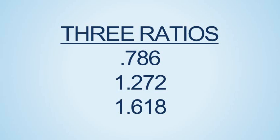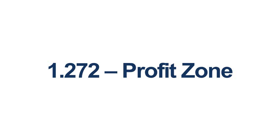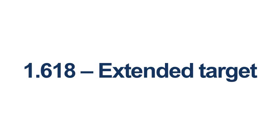We're going to use the 0.786, the 1.272, and the 1.618 in this method, although you can also use the 0.50 and 0.618 for objective areas to scale out of your trade. The 0.786 is our confirming ratio. If price fails at this level, we may want to tighten up our stops or exit the trade completely. If the 0.786 level breaks in the direction of our trade, we're going to be looking at the 1.272 ratio for profit taking. Depending on its strength, the 1.618 can come into play — that is another level we'll monitor when and if price approaches it.